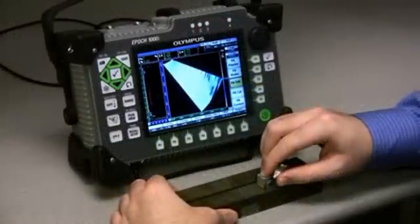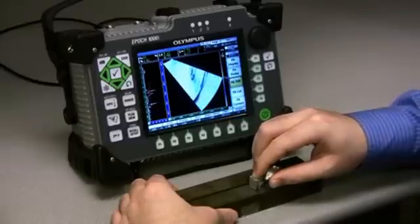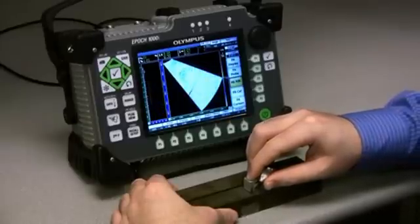The EPIC 1000 series provides the highest performance conventional flaw detection available in an EPIC flaw detector and augments that capability with basic phase array imaging.